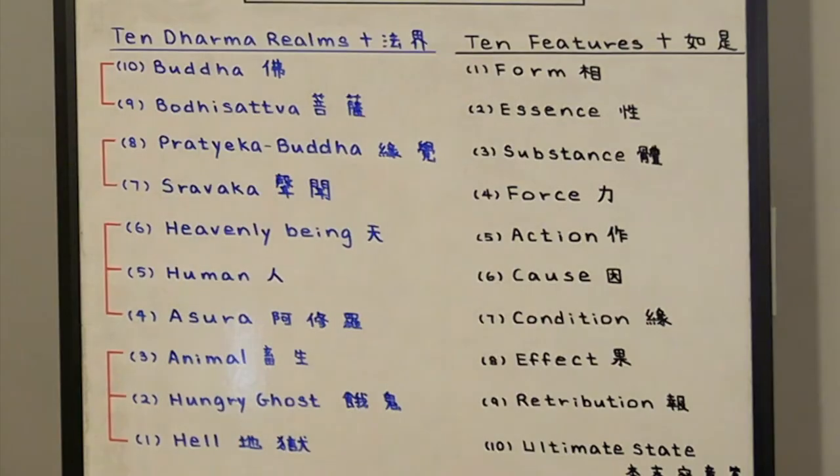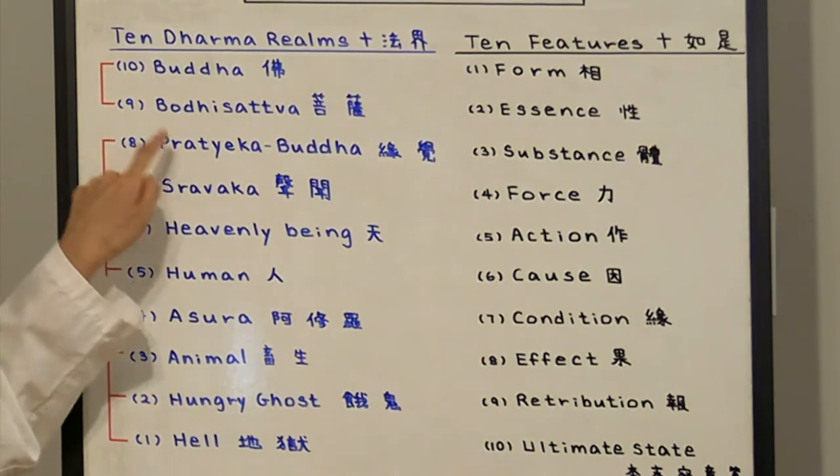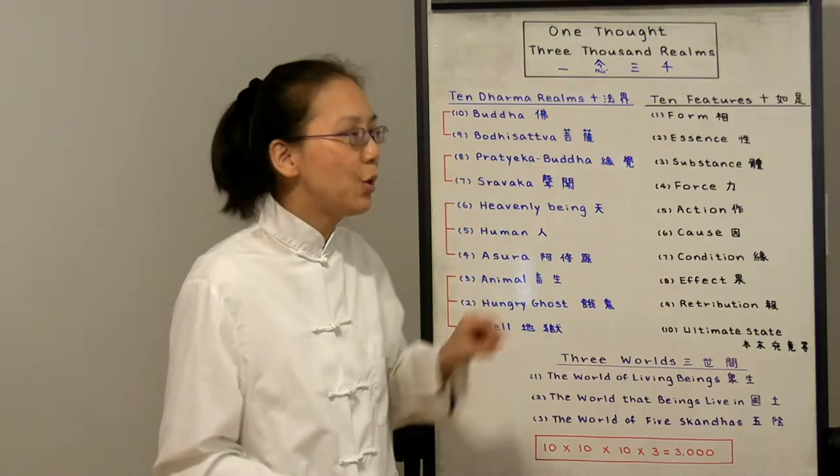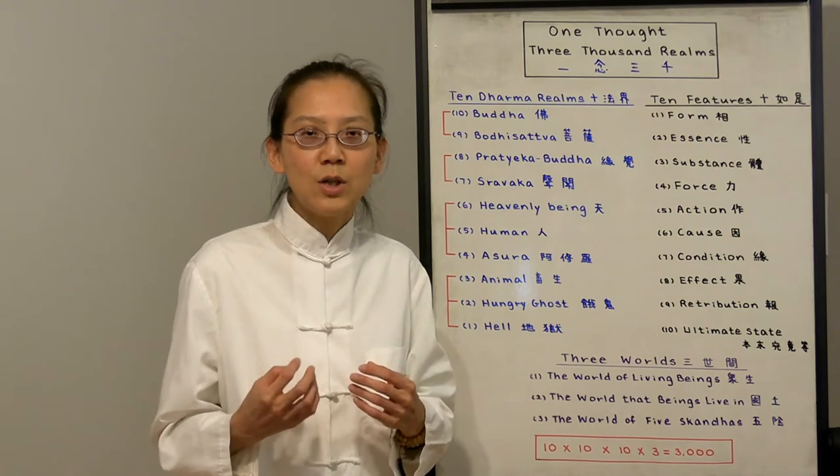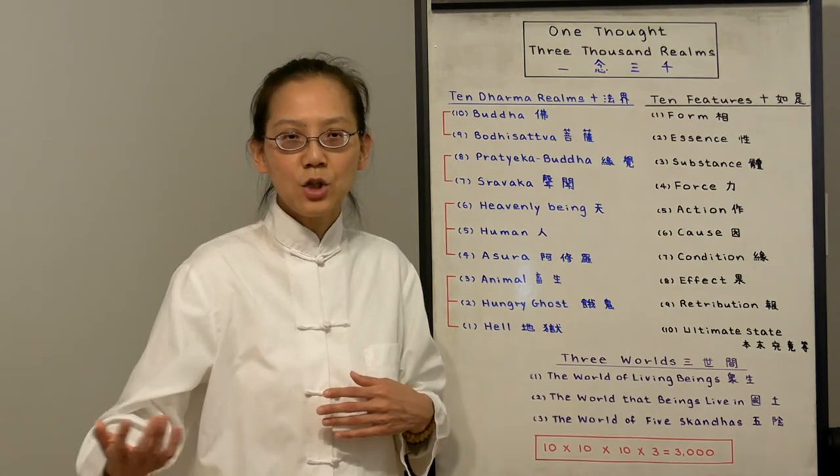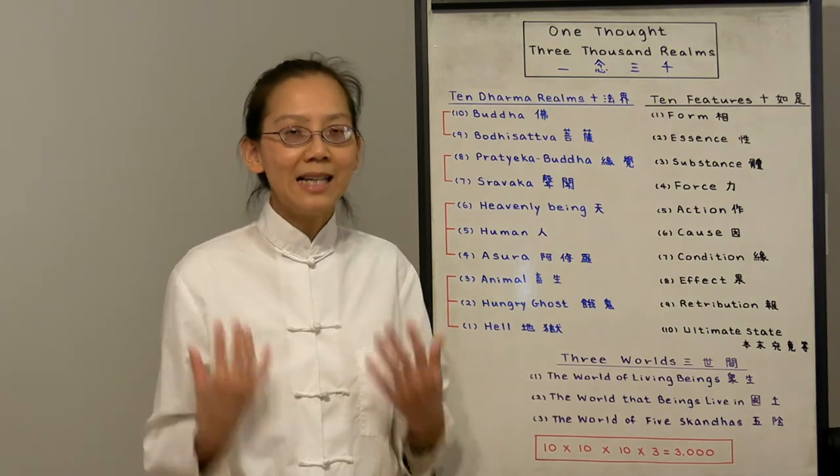But if we cultivate, we can go up to the four realms of the sages. Number seven is Shravaka and number eight Pratyeka Buddha. These two are self-enlightened beings. They have strong renunciation to get out of the reincarnation. So they let go of all afflictions. So they're self-enlightened.